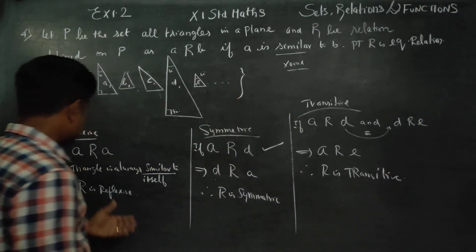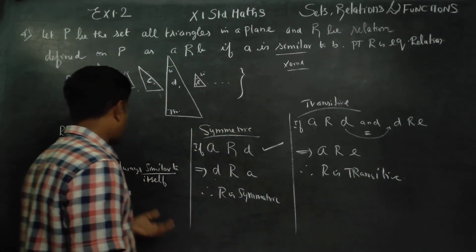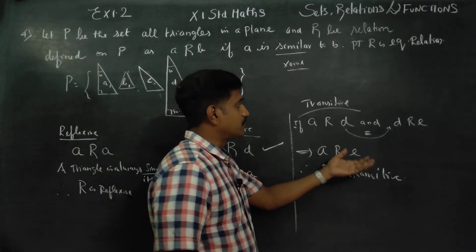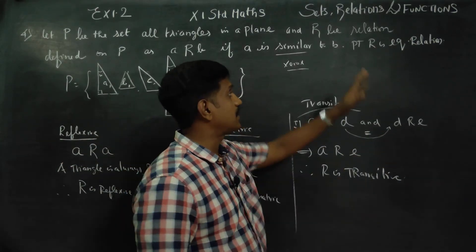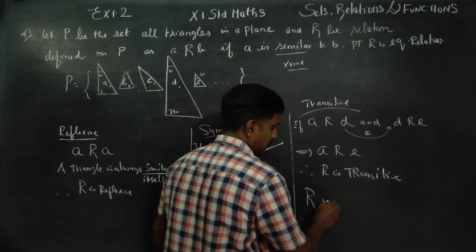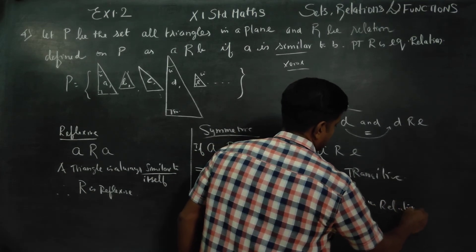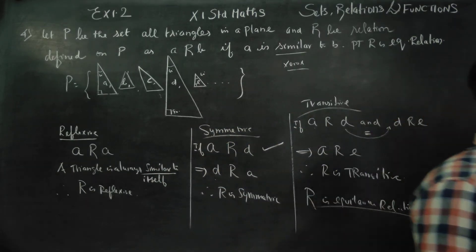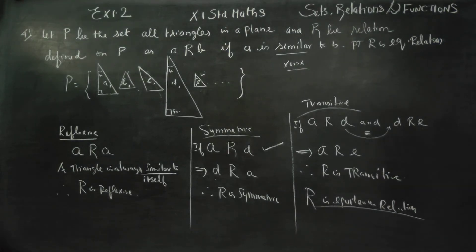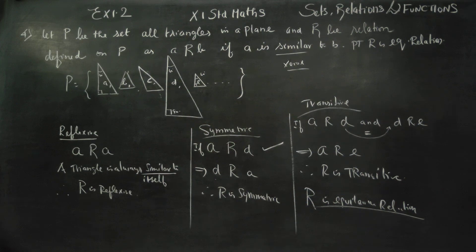If R passes reflexive, symmetric, and transitive — if R is true in reflexive, symmetric, and transitive — then R is an equivalence relation. You have proved all three properties. In the world, you can see a group of triangles. The relation 'similar to' is an equivalence relation. Thank you.